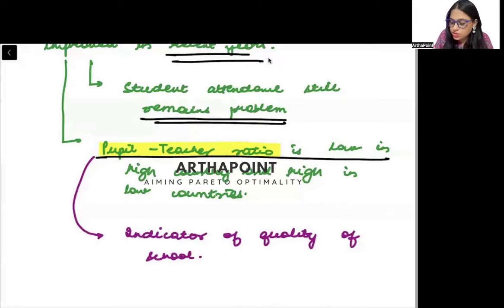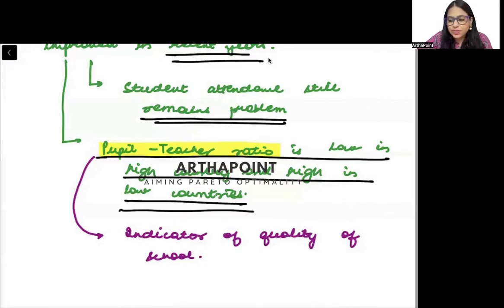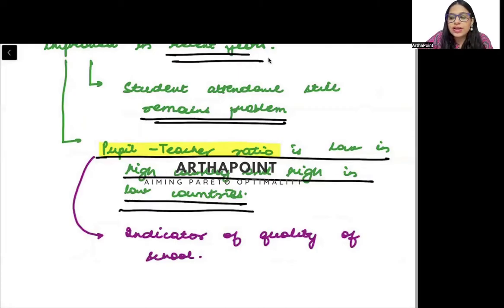The pupil-teacher ratio is low in high-income countries and high in low-income countries. We find out the children-to-teacher ratio for personal attention. As you progress to masters and then PhD, your ratio further declines — a teacher may have only two or three research students. This is because as you go to a higher level of education, the quality of education and personal attention needed increases.